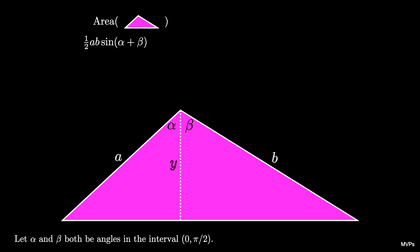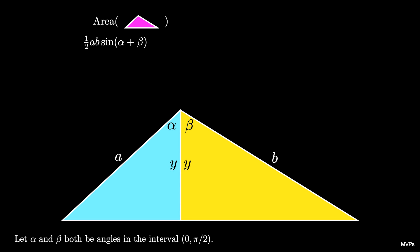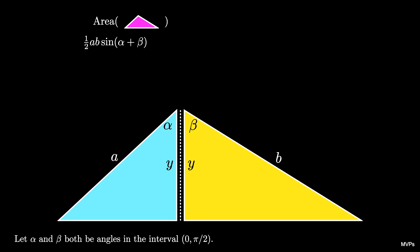Suppose the altitude from the angle alpha plus beta has length y. This altitude cuts the triangle into two sub-triangles that are both right triangles, both with a side length of y.